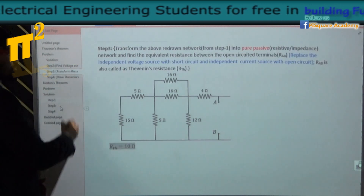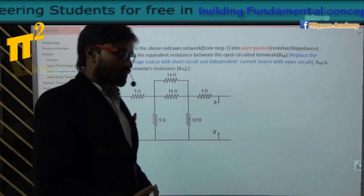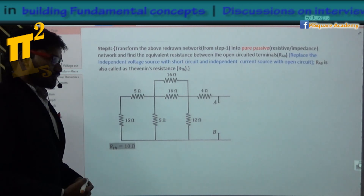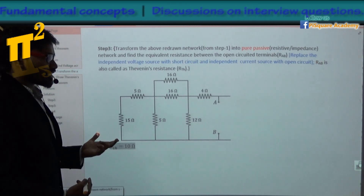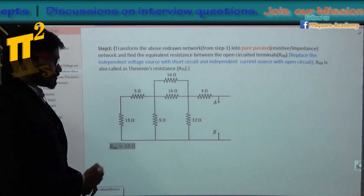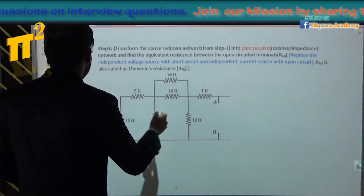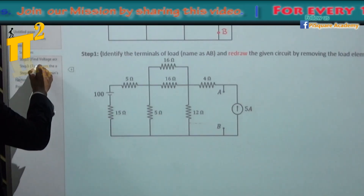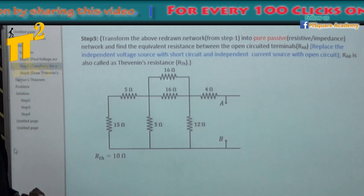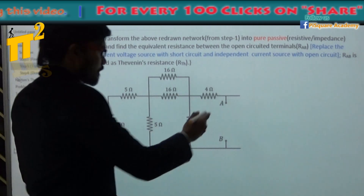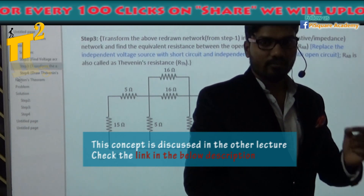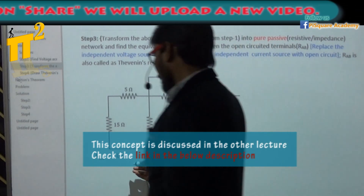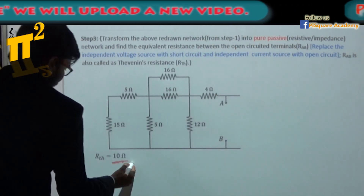Step 3: transform the given network into a pure passive network. Replace the voltage source with a short circuit and the current source with an open circuit. Redraw the network accordingly. Now find RAB. Using the method for finding resistance between two points — we have a video on this — I got RTH as 10 ohms.